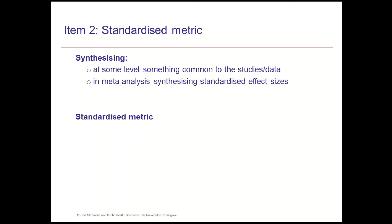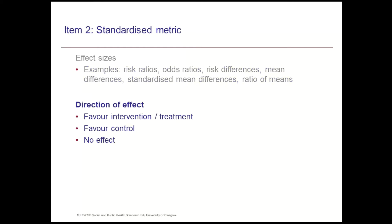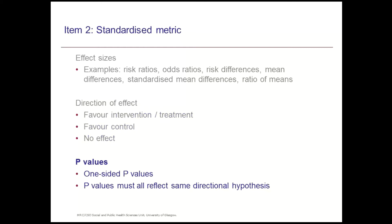There may be a reason we are not able to meta-analyze — for example, effect sizes may be provided in the studies but variance is missing. Effect sizes include things like risk ratios, odds ratios, and standardized mean differences. Direction of effect refers to whether results favor the intervention, favor the control, or report no effect. P-values would be one-sided p-values, with all p-values reflecting the same directional hypothesis.